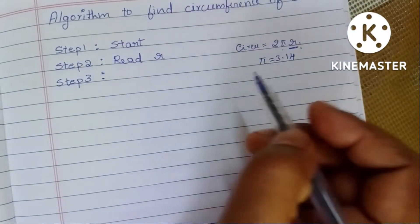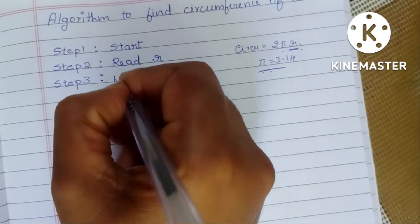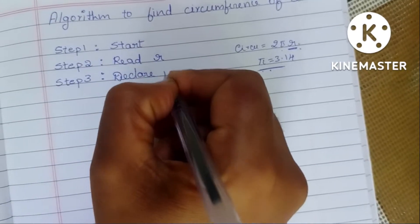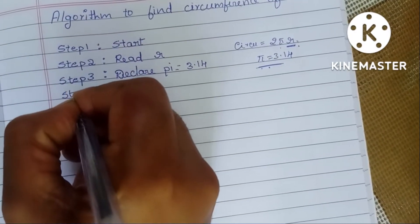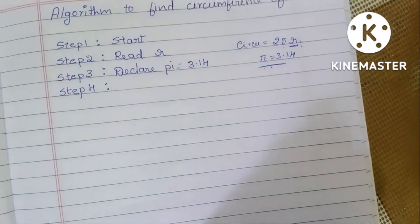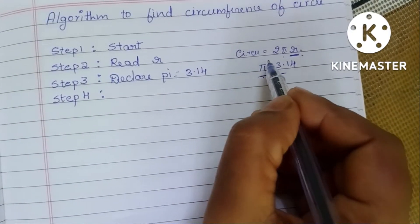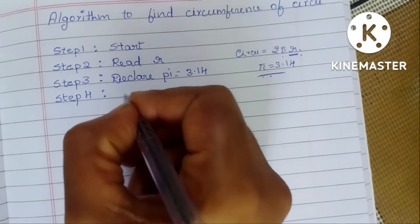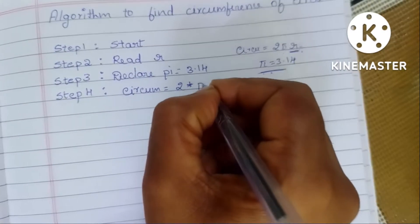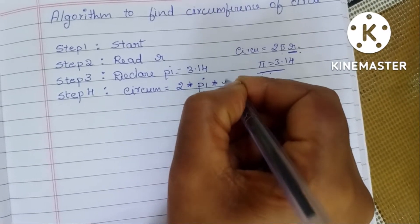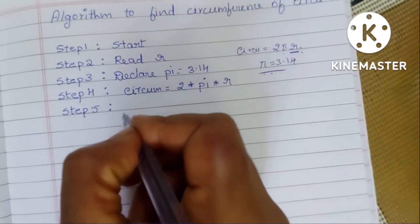Step 3 — the process starts here. Since π is a constant, we declare pi = 3.14. Step 4 — we apply the formula: circumference = 2 × pi × r.